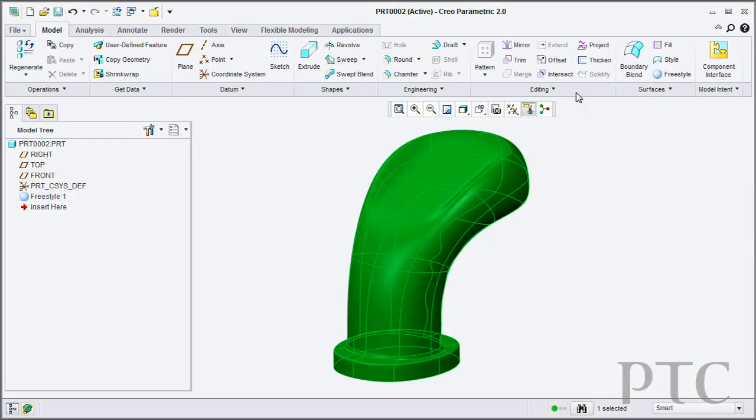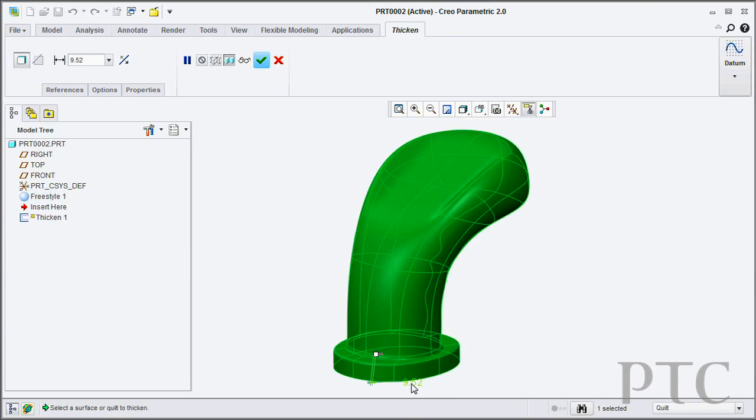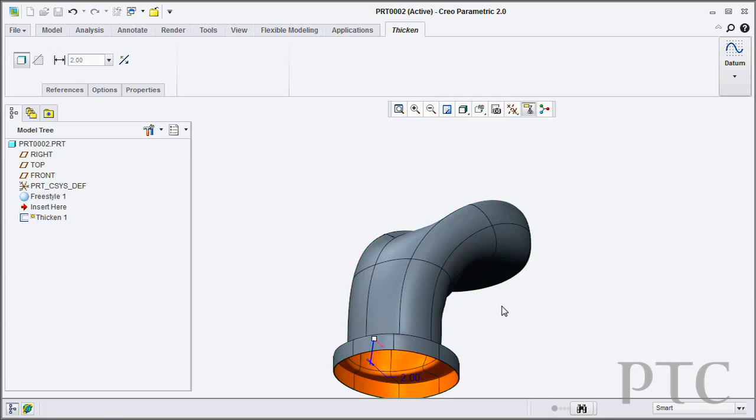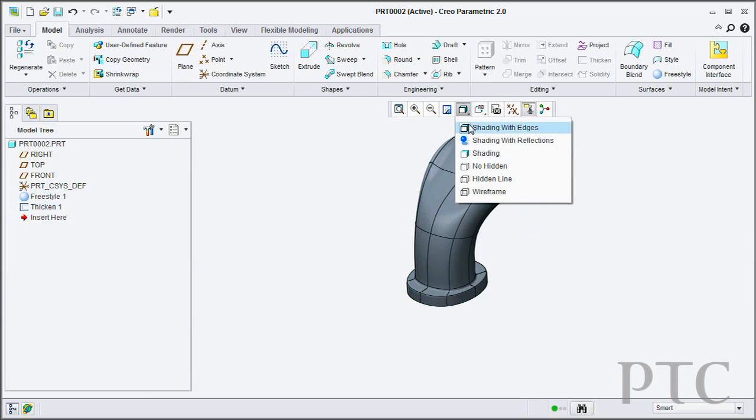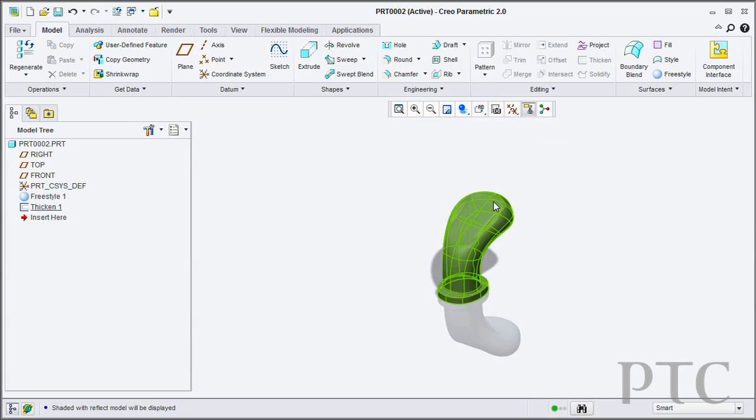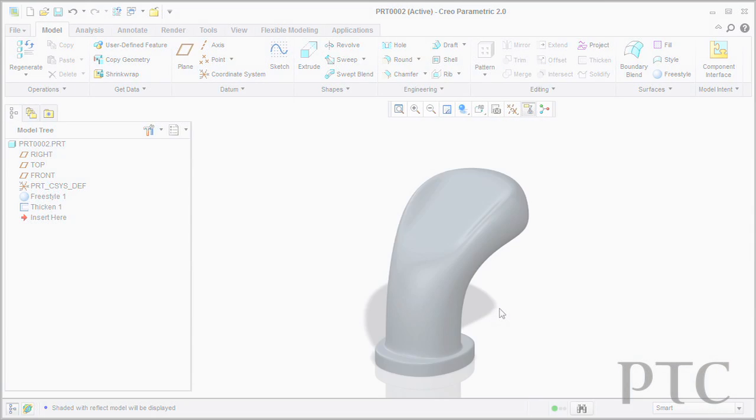Once I'm happy with the form that I've done, I can complete the Freestyle feature. What I'm left with is a high quality quilt of surfaces, just like any other quilt that would exist inside Creo Parametric. I can then perform regular feature operations on it. I can trim it, merge it, add rounds to it.